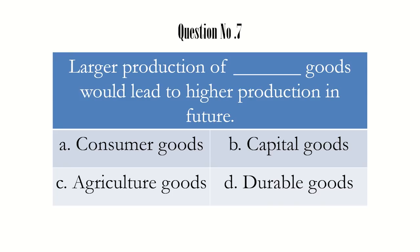Question number 7: large production of dash goods would lead to higher production in future. Goods are of different types, and the four options are four different kinds of goods. Consumer goods are goods we buy for consumption — once we consume, it is over, like a packet of chips. This will not lead to further production. Capital goods are goods which help in the production of other goods and services, so there is a chance that B might be the answer.